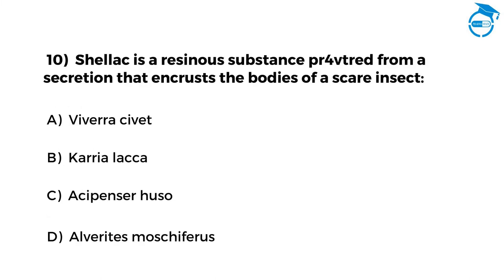Shellac is a resinous substance purified from a secretion that encrusts the bodies of a scale insect. Option A: Thyreae saivet. Option B: Kerria lacca. Option C: Aspidiotus yusuf. Option D: Aleurites moluccana.